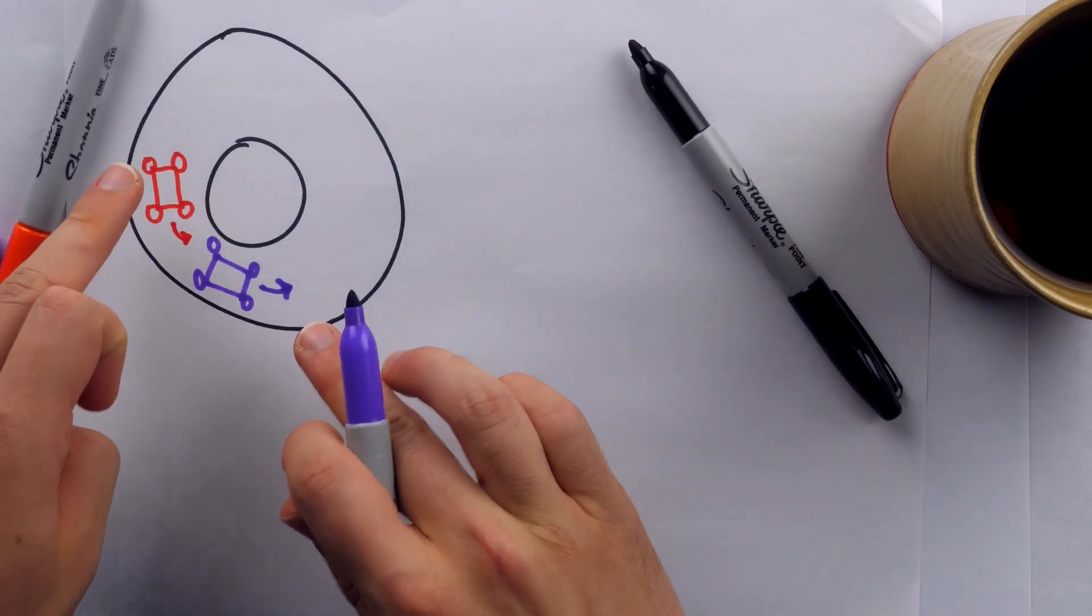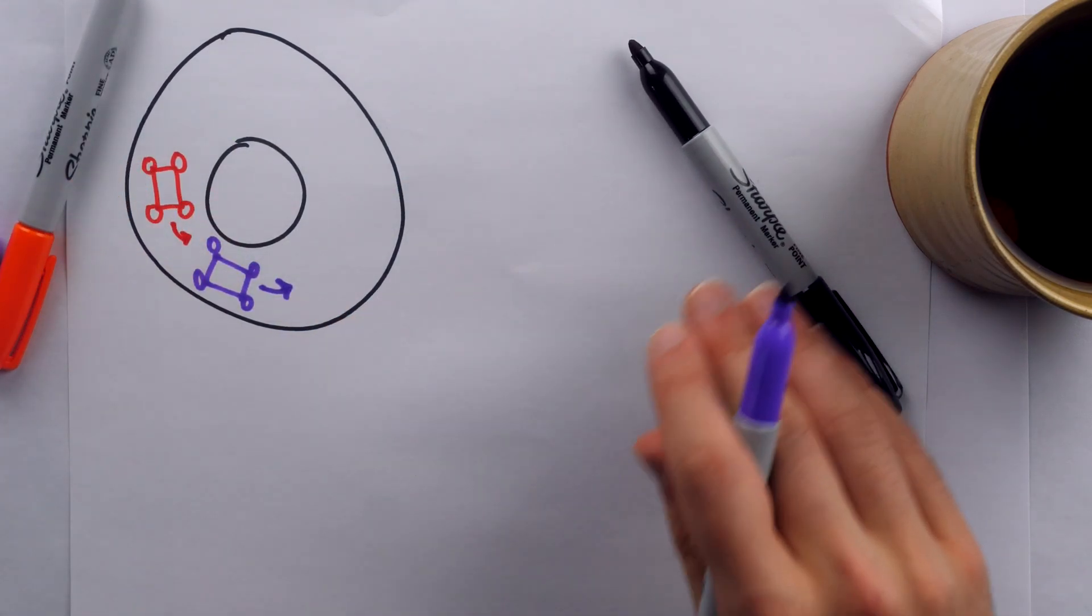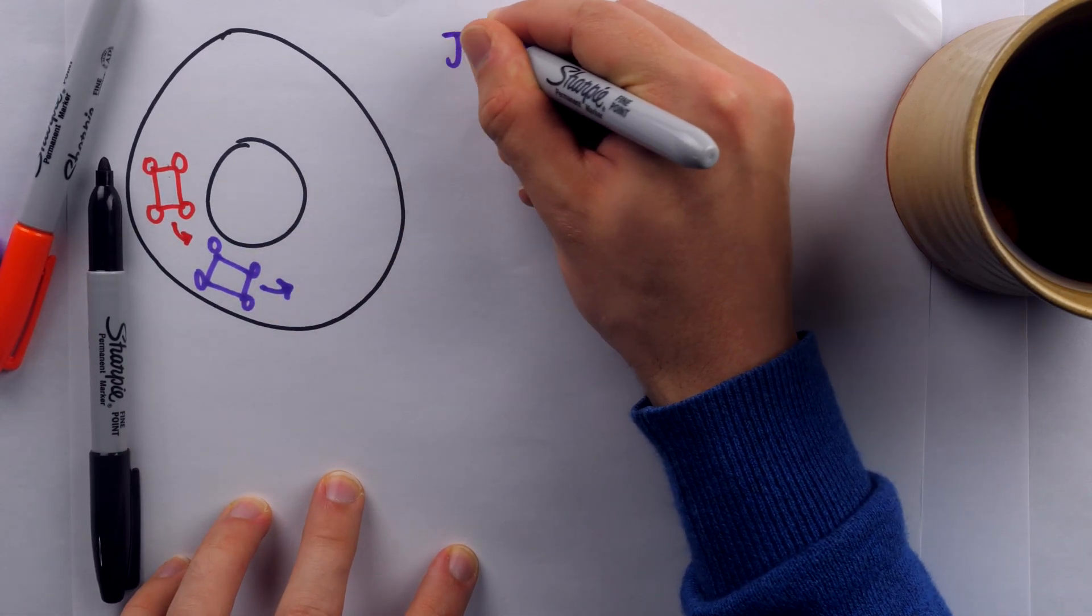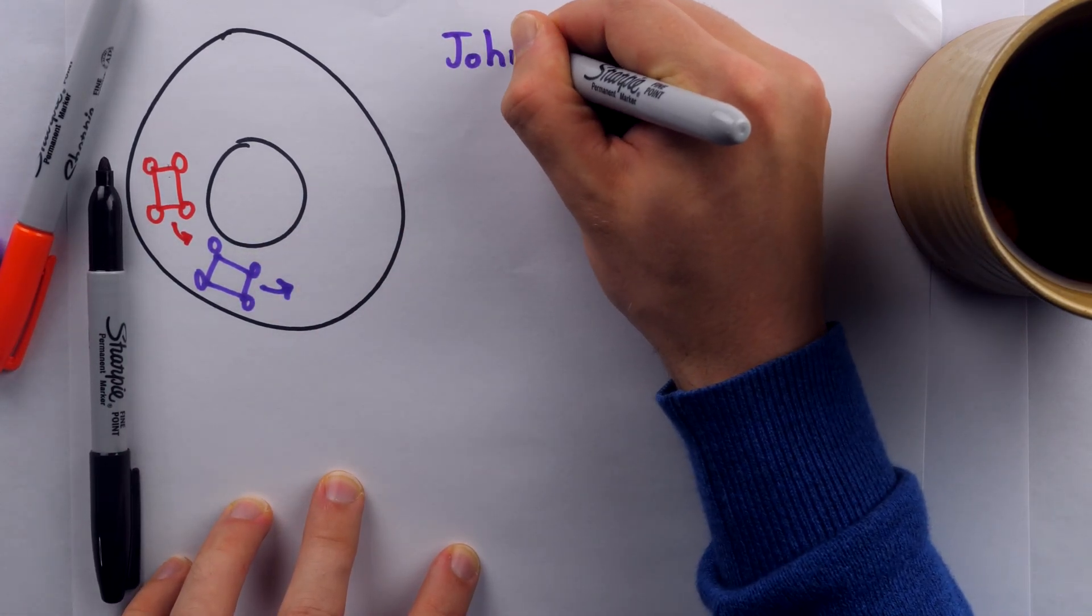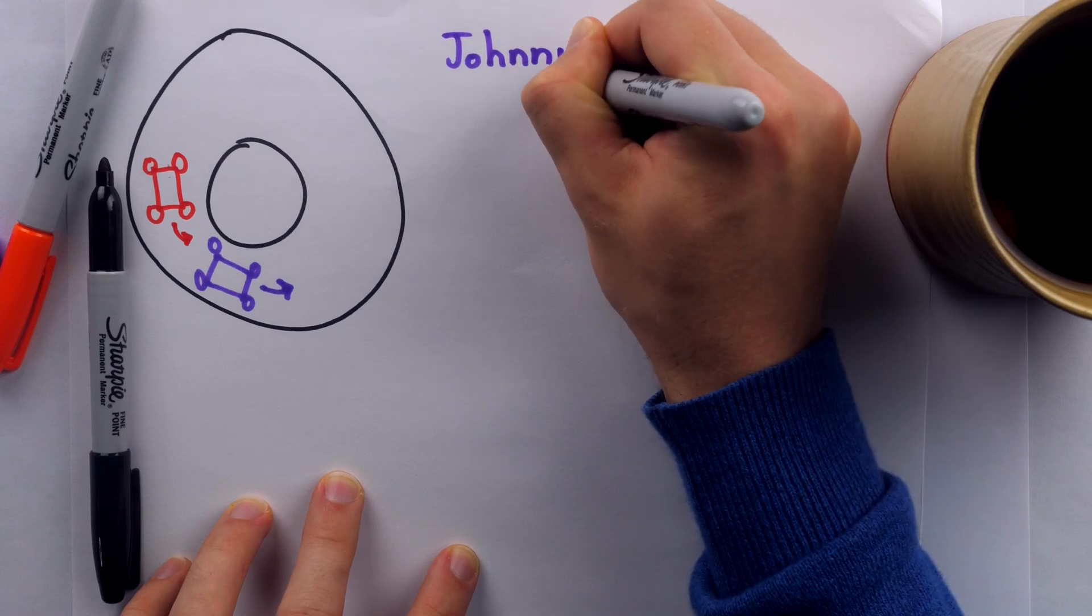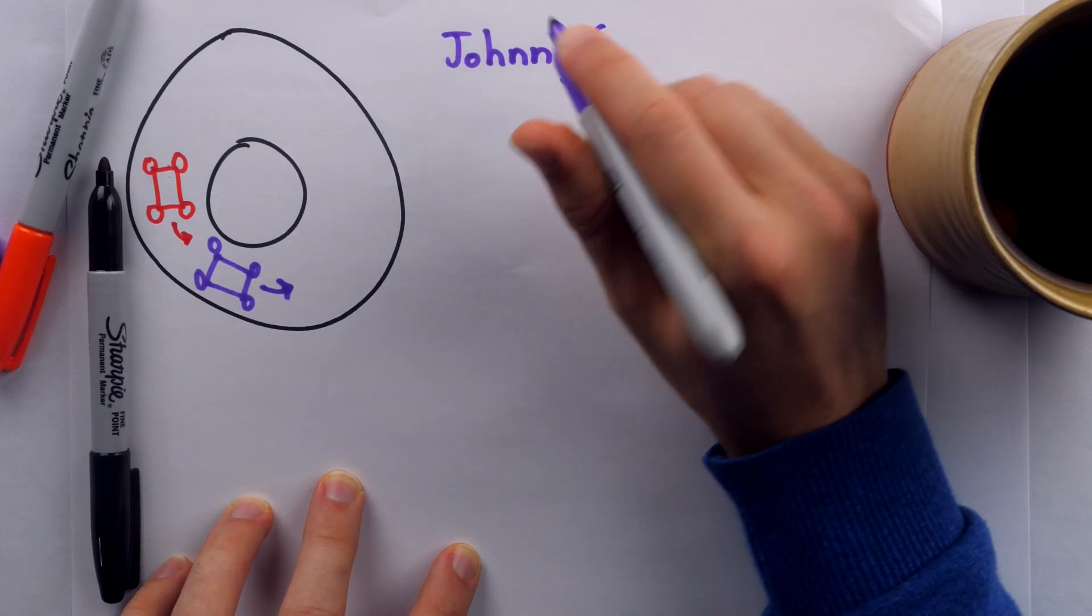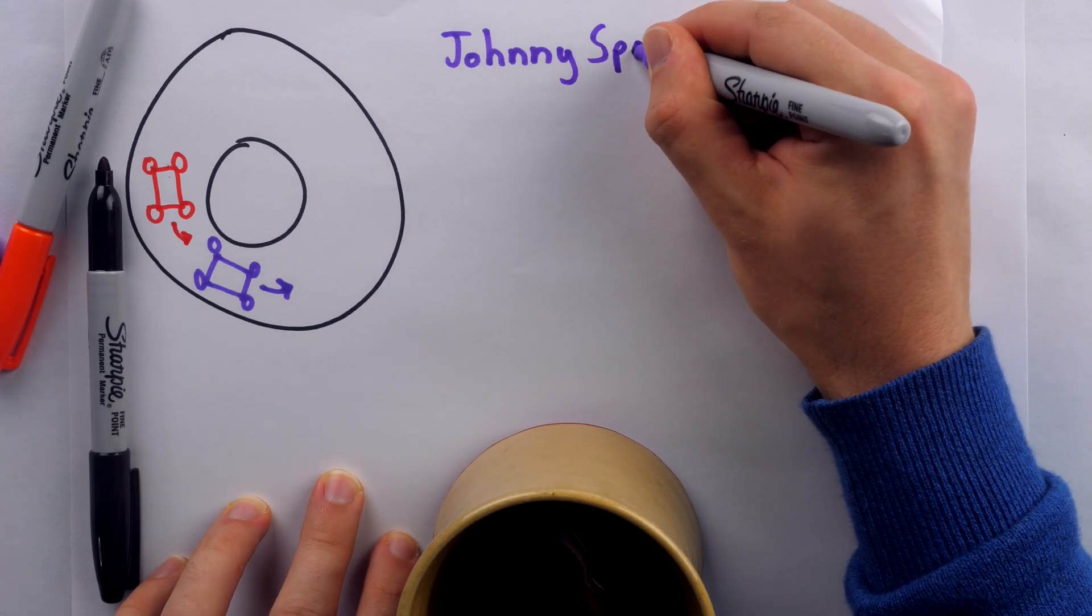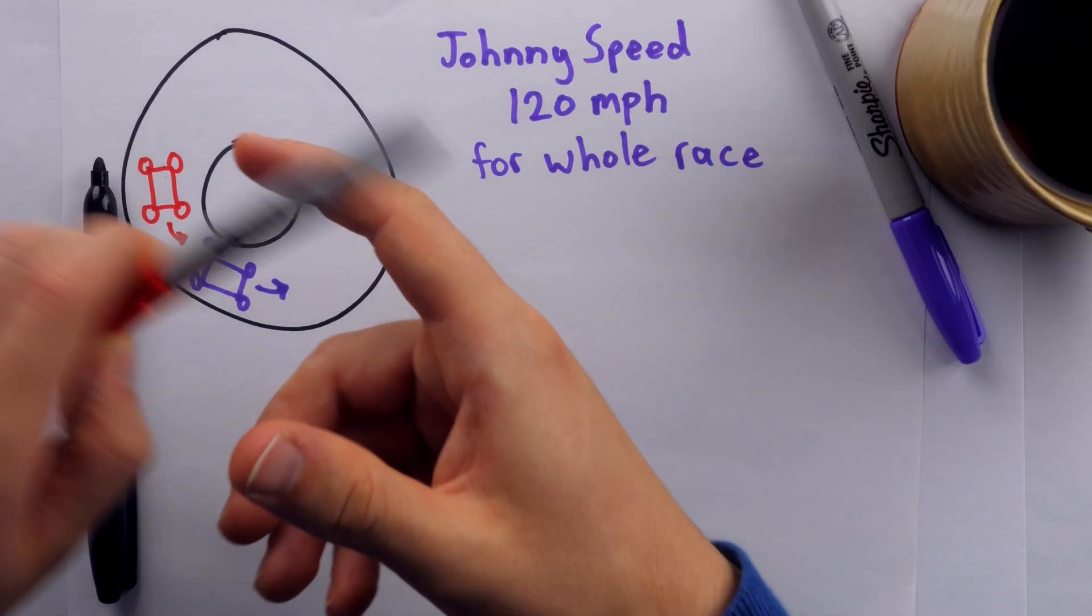Okay, so these two racers take two different strategies to this race. Let's say, in purple, we have Johnny Speed, and what Johnny Speed is doing is going a blistering 120 miles per hour throughout this entire race.